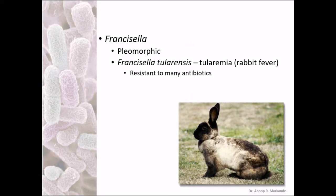Francisella is a pleomorphic organism — pleomorphic means it does not have a definite shape. Francisella tularensis causes tularemia, that is rabbit fever, and this is known to be resistant to many known antibiotics.